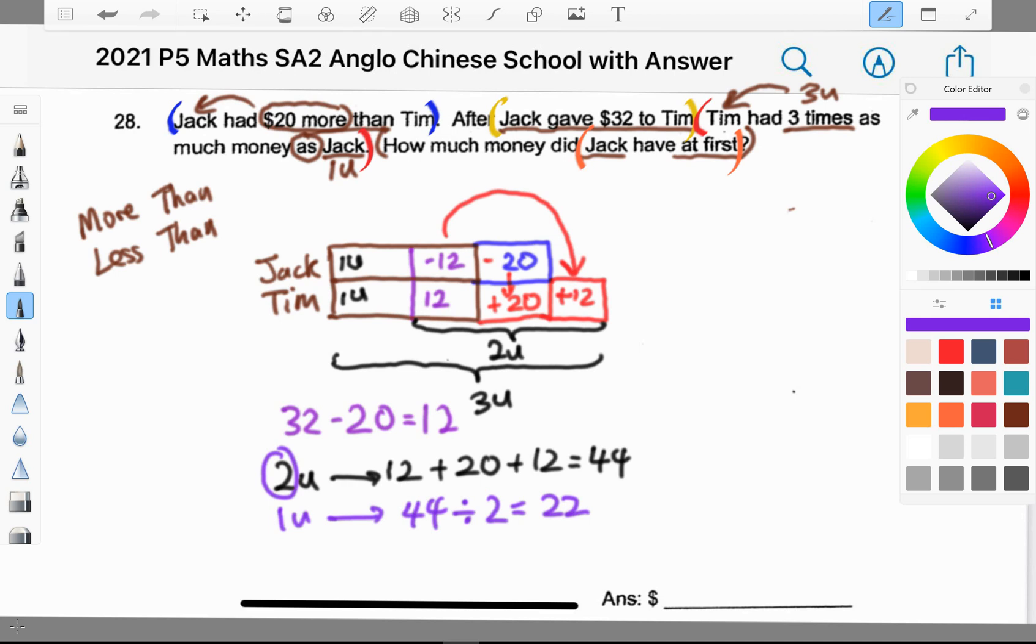The question wants us to find Jack at first. Jack at first is simply adding one unit, which is 22, with 12, and then with 20. Since this is paper one, I can't use the calculator, but this is very simple. I can add them up, do a simple working, or I can even do mental sum. 22 plus 12 is 34, plus 20 will be 54.